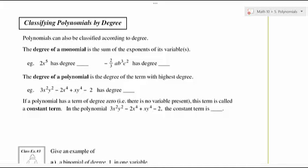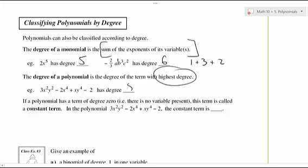Polynomials can be classified according to degree. The degree of a monomial is the sum of the exponents of its variables. So 2x to the fifth has a degree of five. Negative two-thirds a b-cubed c-squared has a degree of six — that's one plus three plus two. The degree of a polynomial is the degree of the term with the highest degree. If a polynomial has a term of degree zero, there is no variable present — it's called a constant term, and it does not change.